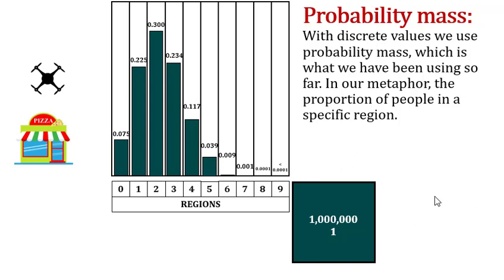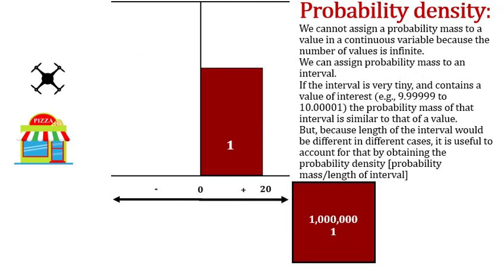Probability density is used when we consider continuous variables — variables with continuous values. Because the number of values in continuous variables is infinite, we cannot assign a probability to each value. So technically the probability mass for each specific value is zero. But what we can do is assign a probability mass to an interval. For example, in this city the whole population is located between kilometer zero and kilometer 20.